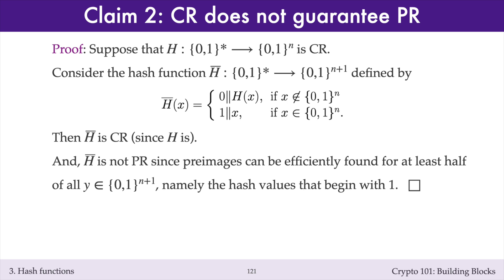I'll next argue that h-bar is not pre-image resistant. Pre-images can be efficiently found for at least half of all possible hash values y, and so with non-negligible success probability when the challenge y is selected uniformly at random. Namely, if y happens to begin with a 1-bit followed by a bit string x of bit length n, then we can easily find a pre-image for y — namely the message x. Therefore, h-bar is a hash function that is collision resistant but isn't pre-image resistant.